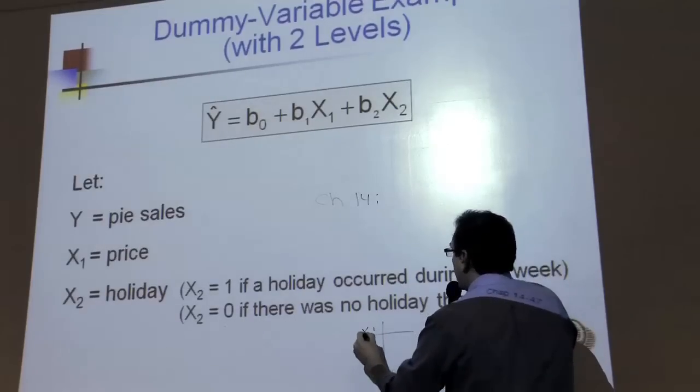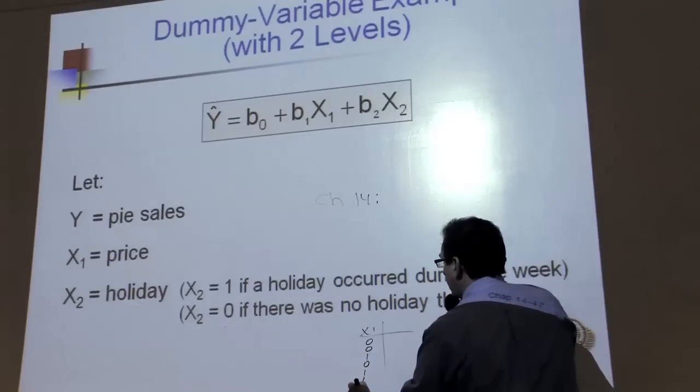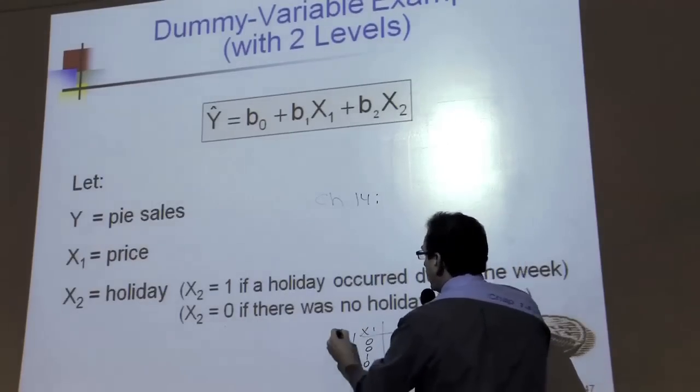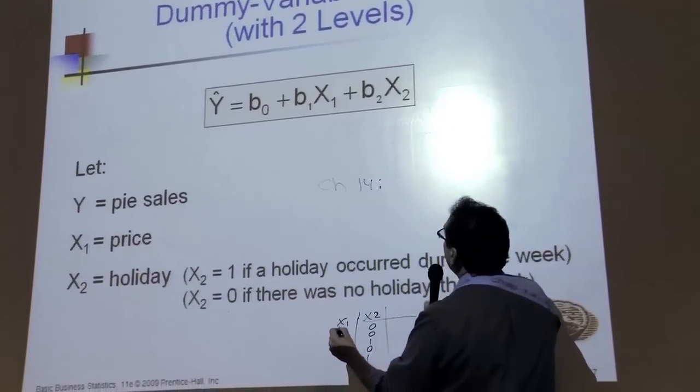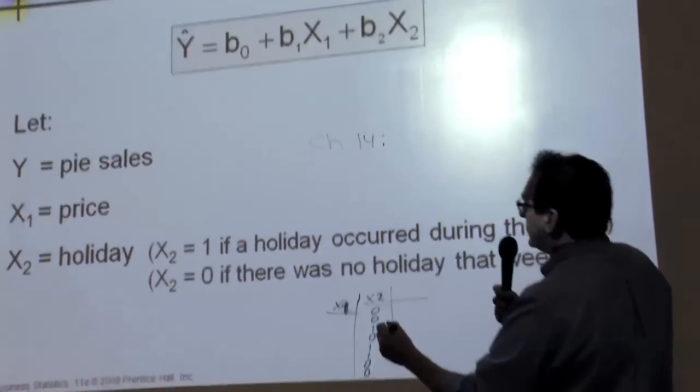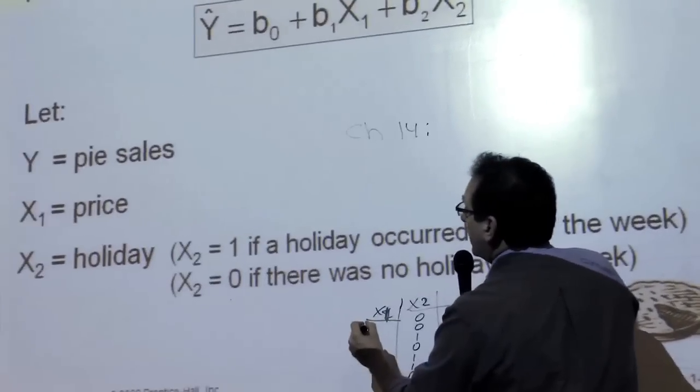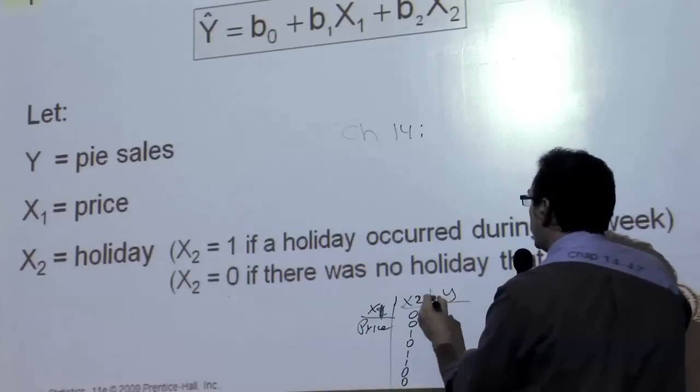You would have your X1 could be zero, zero, one, zero, one, one, zero, zero, and the X2 could be the actual, in this case it's X2 really, and the X1 could be the other variable sales, I'm sorry, price, and these two things together will try to predict the sales.